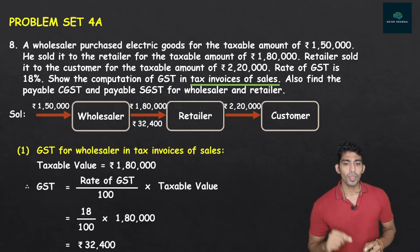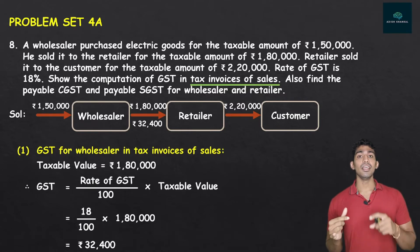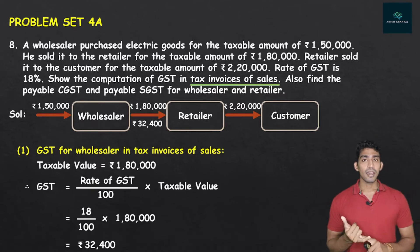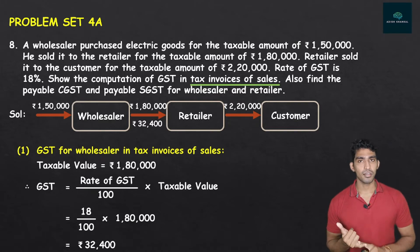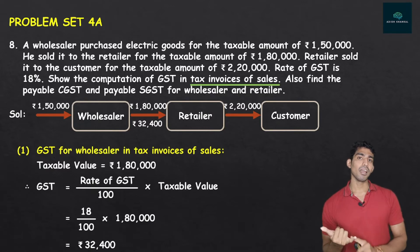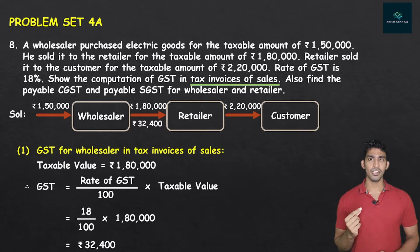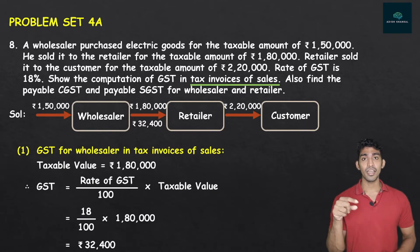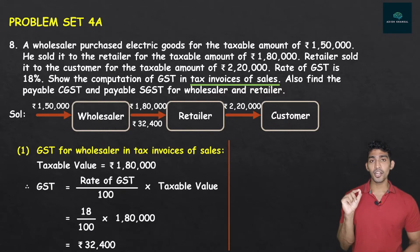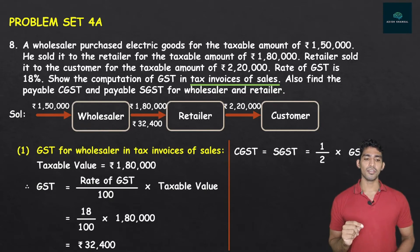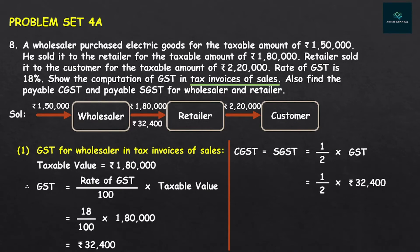That completes the first part of the answer — showing GST computation in the tax invoice for the wholesaler. For the retailer's tax invoice of sales, taxable value is Rs. 2,20,000. GST = (18/100) × 2,20,000 = Rs. 39,600. CGST = SGST = half of 39,600 = Rs. 19,800 each. The first requirement — showing computation of GST in tax invoices — is done.